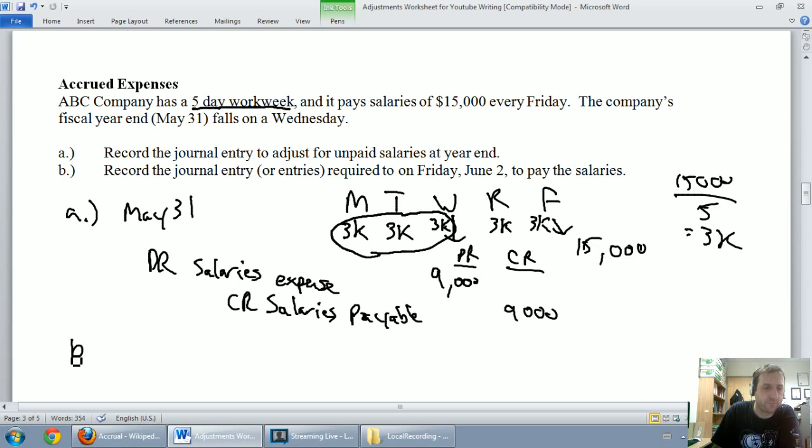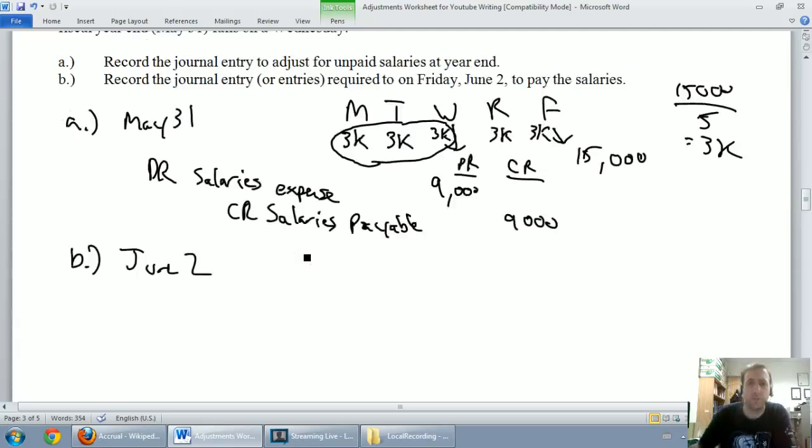We've got a good journal entry there for part A. Let's look at part B. Part B says record the journal entry required on Friday, June 2nd. So it's June 2nd, and I'm going to say, to pay the salaries, how much did I pay? Did I pay $9,000? No. Did I pay $6,000 that I missed? No. I pay the full amount. The employees should be blissfully unaware of our fiscal year end as far as their salaries go. I don't know my university's fiscal year end, I don't care, I know my payday. So I'm going to credit cash for just the normal amount. This is just a normal payday for our employees.